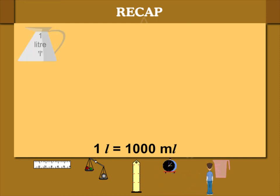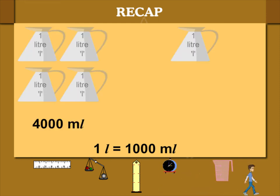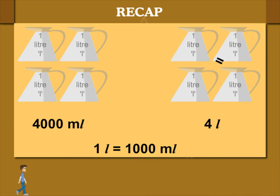1 liter is 1000 milliliters. So, 4 liters is 4000 milliliters.